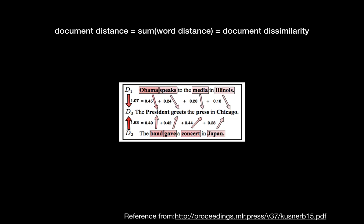Looking at the research paper example: D0 is 'the president greets the press in Chicago', D1 is 'Obama speaks to the media in Illinois', and D2 is 'the band gave a concert in Japan'. The distance from D0 to D1 is 1.07, while D0 to D2 is 1.63. Since D0 to D1 is smaller, that means D0 and D1 are more similar than D0 and D2.